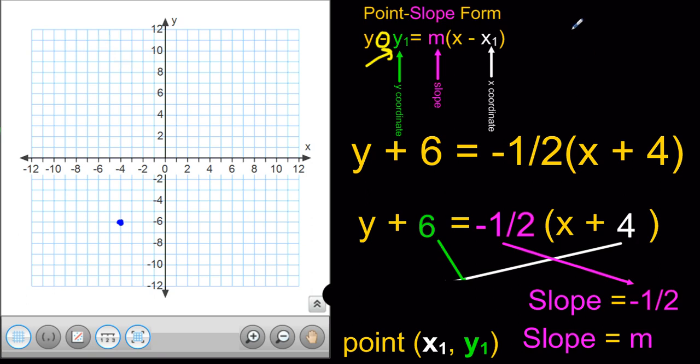My slope is equal to negative 1 half. Again, I like to start, if it's a negative slope, with the negative sign on the run. So, I have a 1 as my rise and I have a negative 2 as my run. This tells me I'm going to go up 1 and to the left 2.